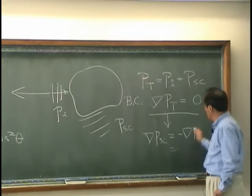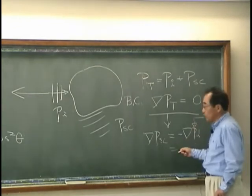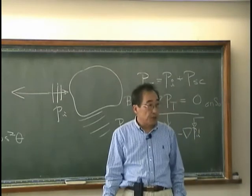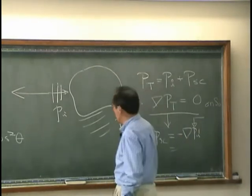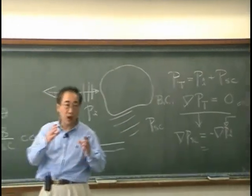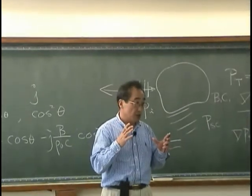This boundary condition gives me that gradient PSC has to be equal to minus PI, and we know PI, therefore we can get it. The scattered pressure field.